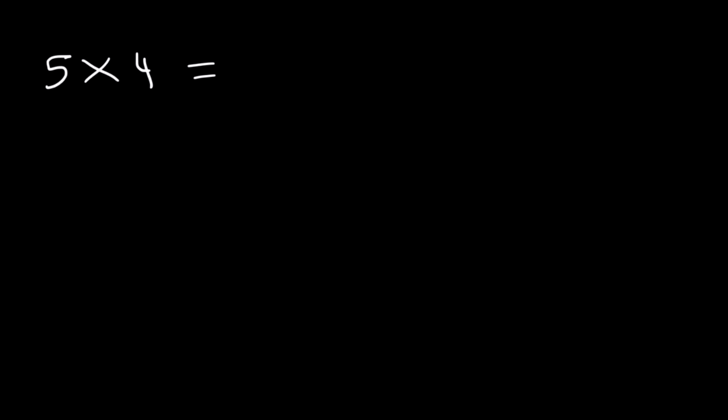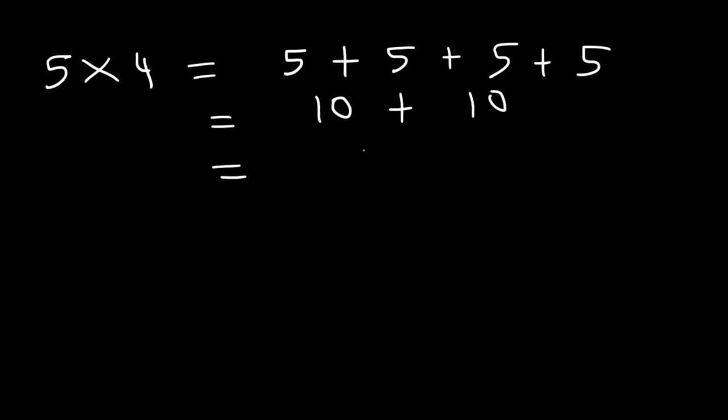Now let's work on simple multiplication problems. What is 5 times 4? Hopefully you've committed this to memory and know your multiplication tables up to 12. But if not — multiplication is really repeated addition. 5 times 4 means you're adding 5 four times. 5 plus 5 is 10, and the other two 5s also add up to 10. 10 plus 10 is 20. So 5 times 4 is 20.